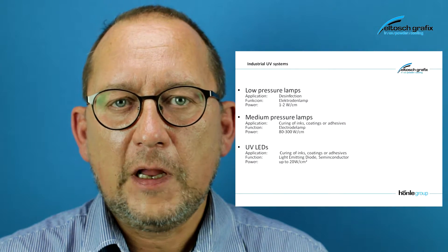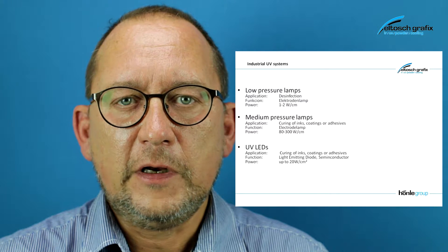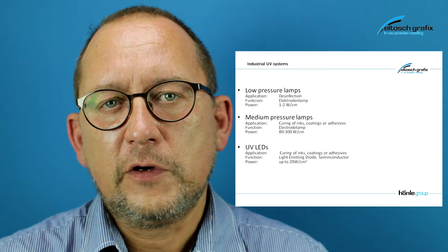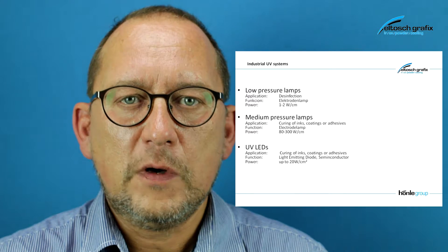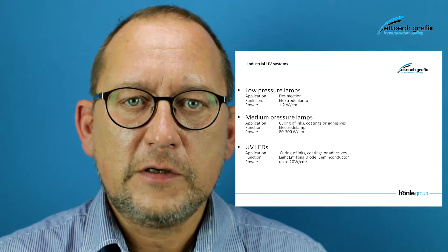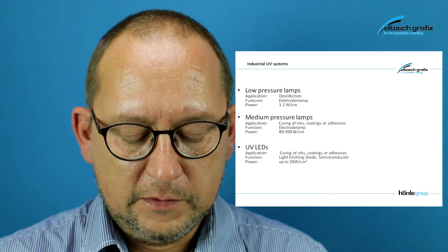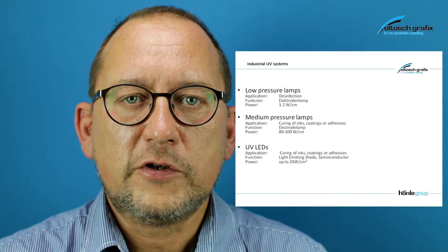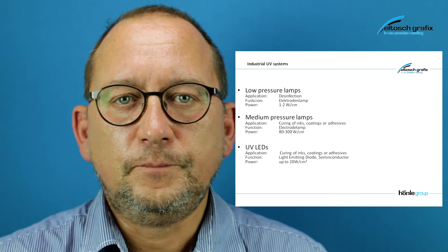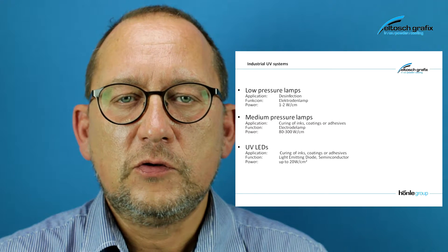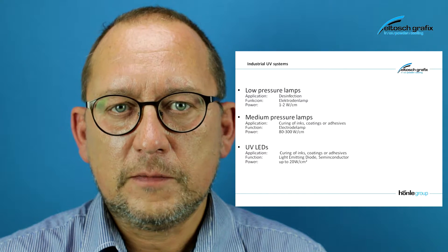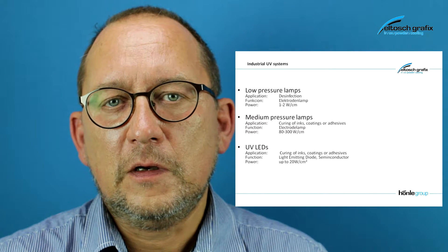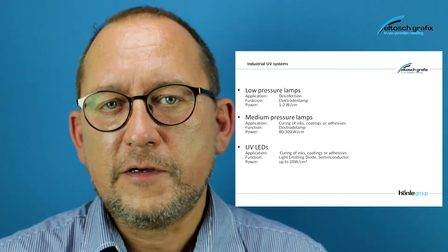We differentiate between low pressure lamps, which are mainly used for disinfection and have a very low power of about one to two watts per centimeter. Then we have medium pressure lamps, which are used in the printing industry and have power up to 240 watts per centimeter. Later on we will also talk about light emitting diodes, but that comes a bit later.